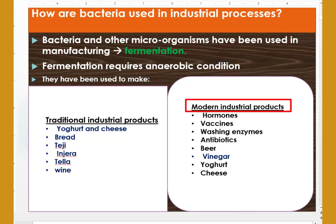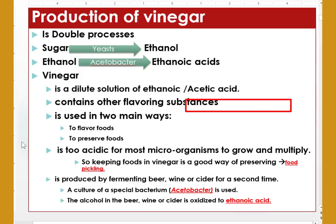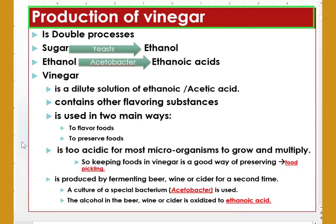In modern industrial processes, these essential microorganisms have been applied to produce hormones, vaccines, washing enzymes, antibiotics, vinegar, yogurt, cheese, and so on. When we get back to production of vinegar.